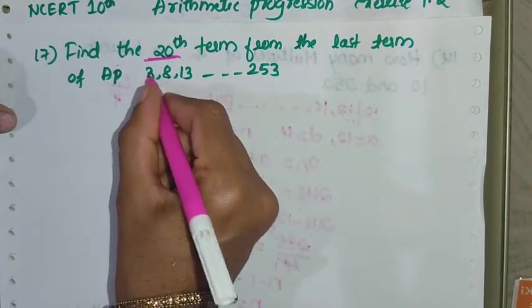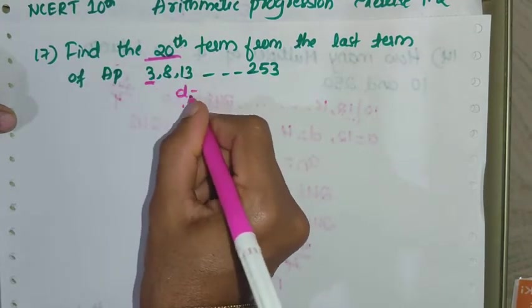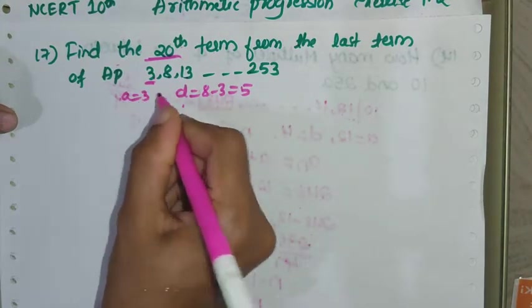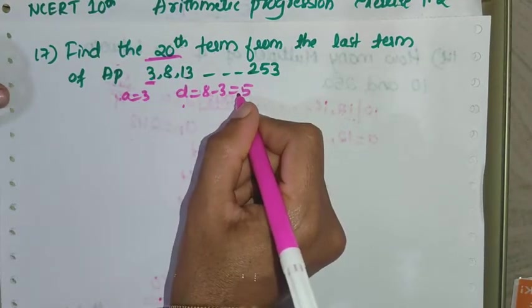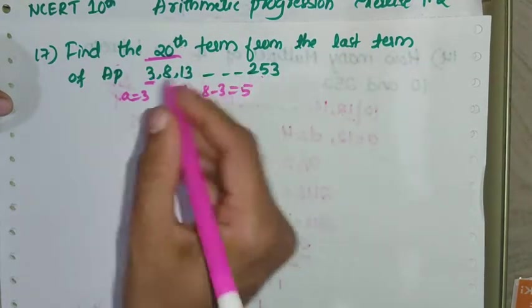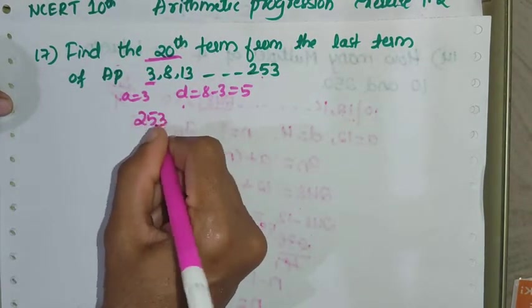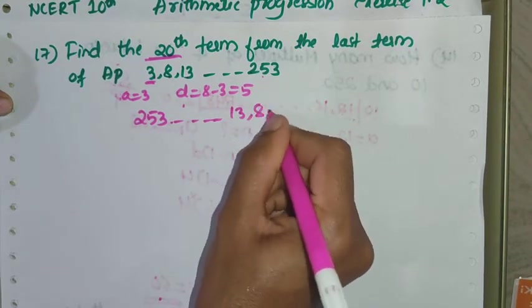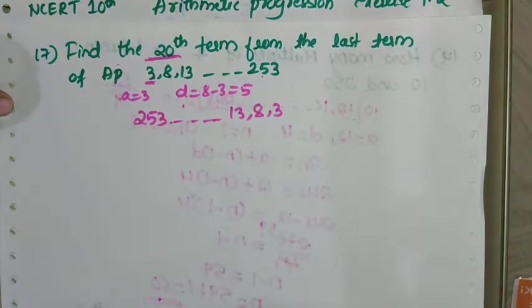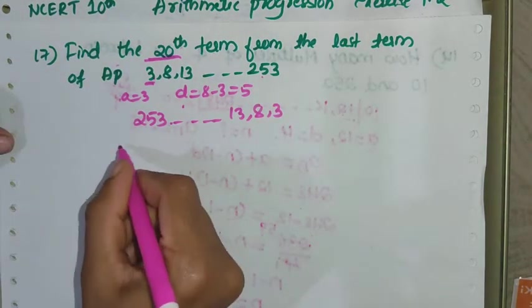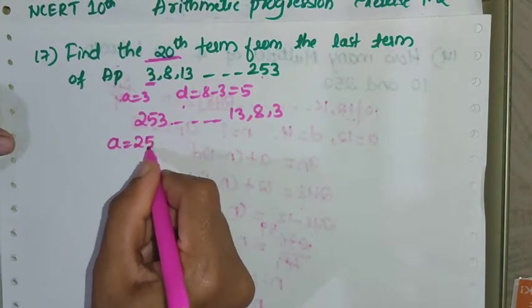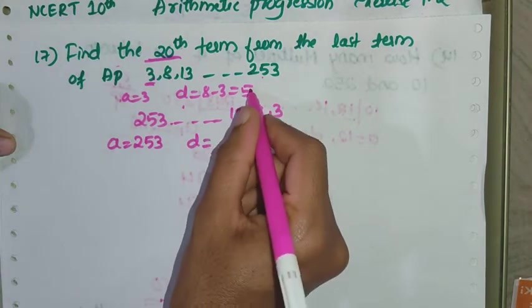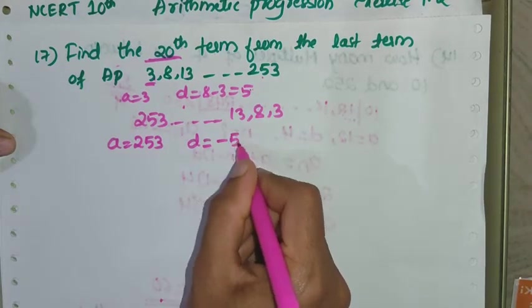Here a is 3 and common difference is 8 minus 3, which is 5. But we need to find from the last term, so I take the last term as the first term. Reversing the AP gives: ...13, 8, 3. So here a is 253 and common difference is minus 5.